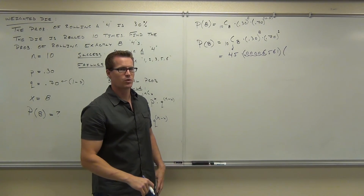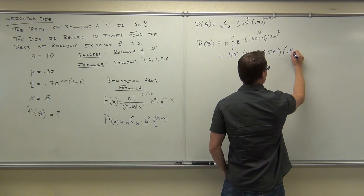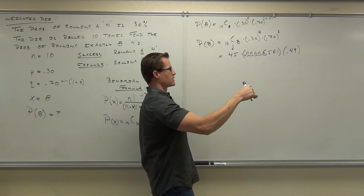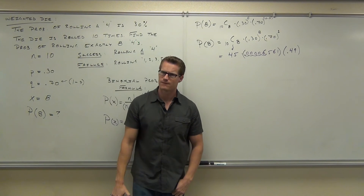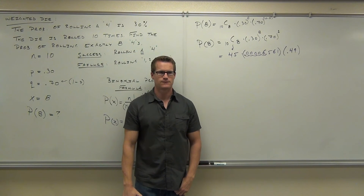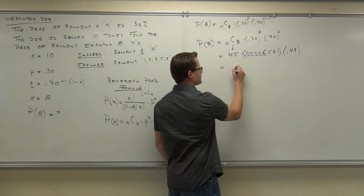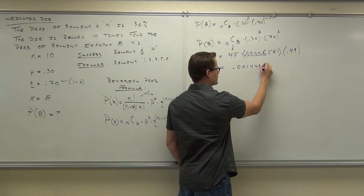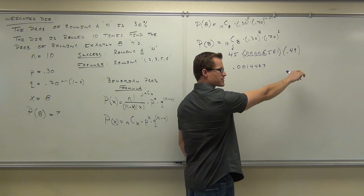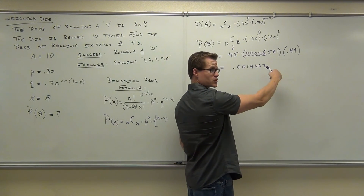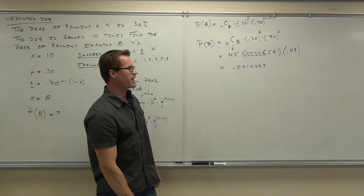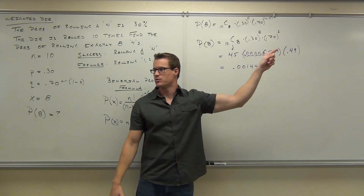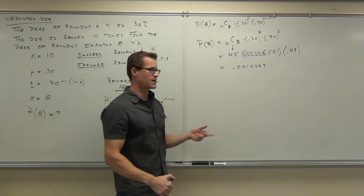0.70 squared gives 0.49. So 45 times 0.000065610 times 0.49 gives approximately 0.0001447. Most of the time we'll round to about that level, but to get there you have to be very accurate with your intermediate numbers. Don't round until the very last step.